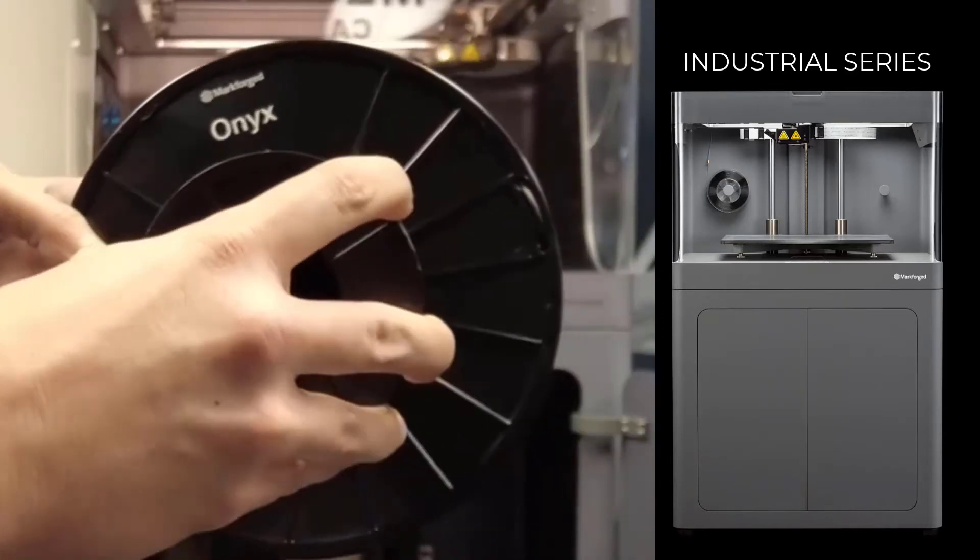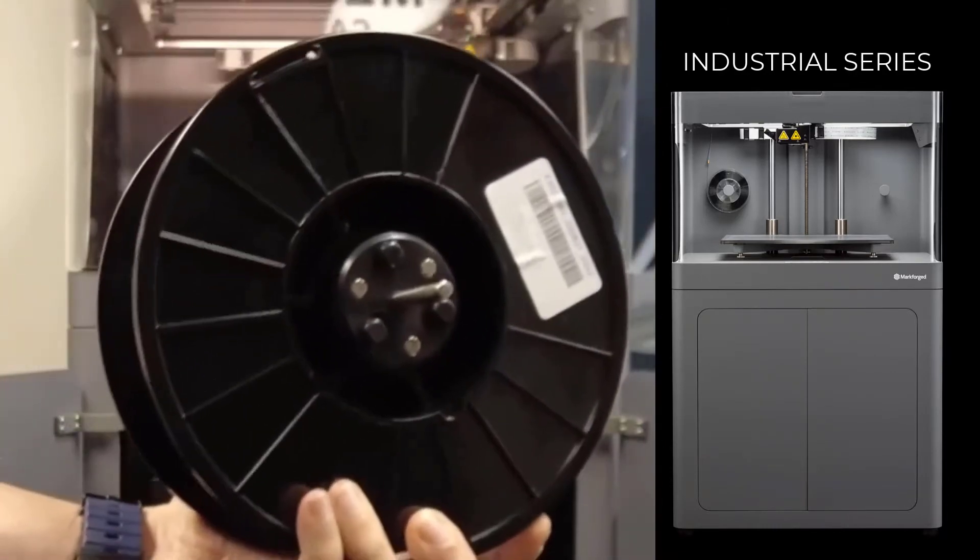Place the plastic filament spool on the spindle and attach the spindle cap such that the magnets connect.